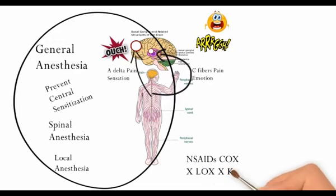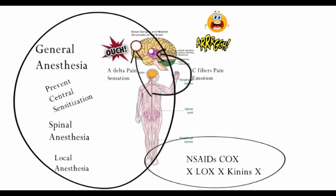NSAIDs act at the tissue level but they block only cyclooxygenase without blocking lipooxygenase and kinase. Thus they don't act completely to shut down the pain.